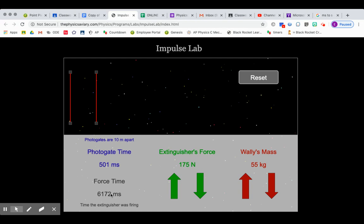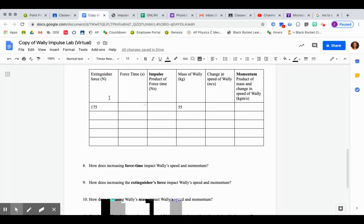So to go from milliseconds to seconds, we're going to move that decimal place over three times. So I have 6.172 seconds.